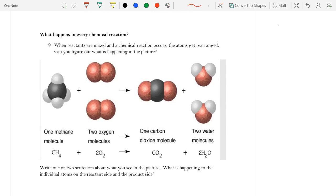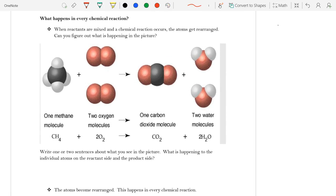So, let's move on. Okay. Well, we know how to read a chemical equation now. But we need to look at what is actually happening. And so, our reactants are mixed. And when a chemical reaction occurs, the atoms get rearranged.